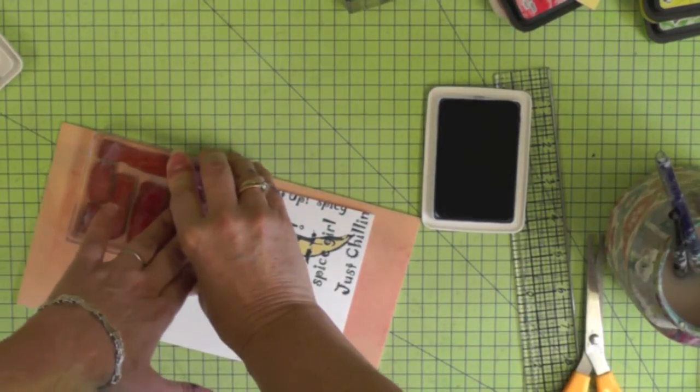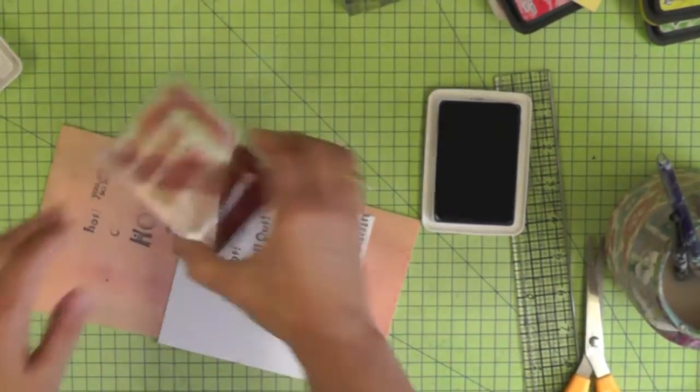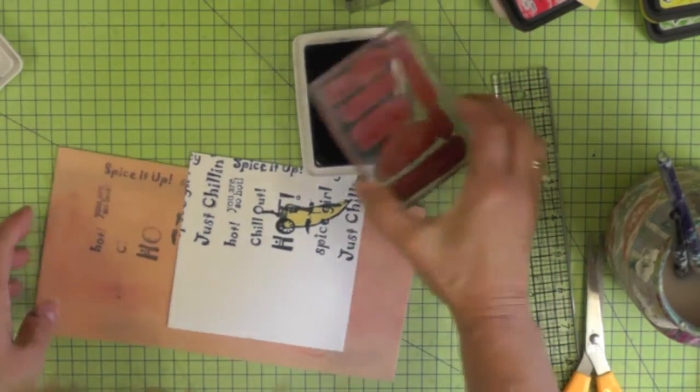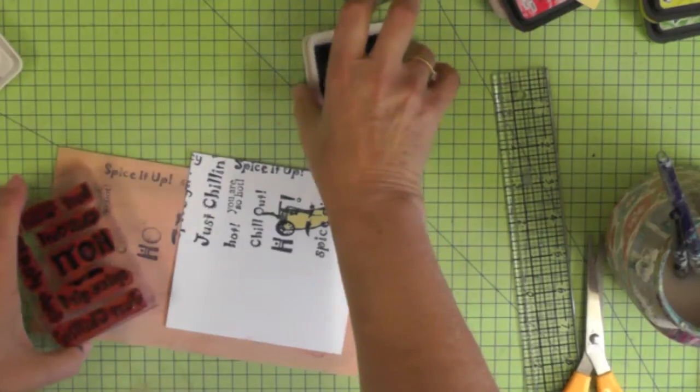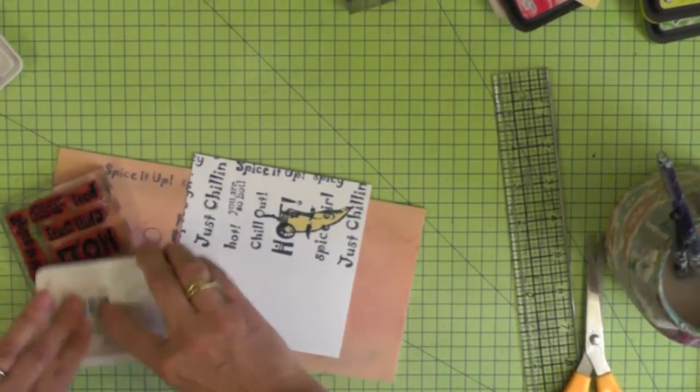I'm stamping with a navy blue archival ink because I've decided that this card has a red, white and blue color scheme just to make a real feature of that lovely red shiny chili. Really take your time when you're doing this.